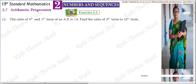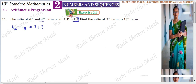Exercise 2.5, 12th sum. The ratio of the 6th and 8th term. The ratio — T6 is to T8 — equals 7 is to 9. The ratio of the 6th and 8th term is 7 is to 9. You have to find the ratio of the 9th term to the 13th term: T9 is to T13.